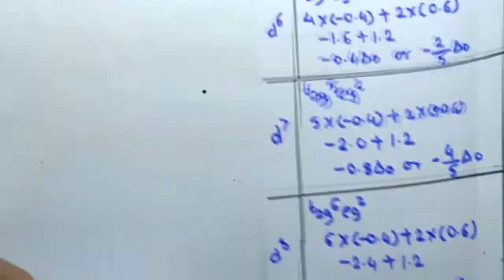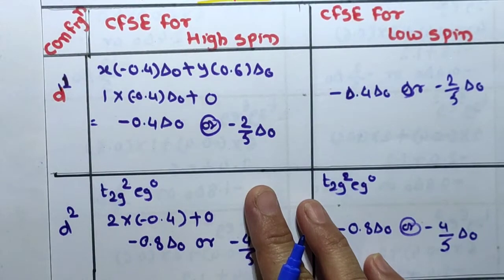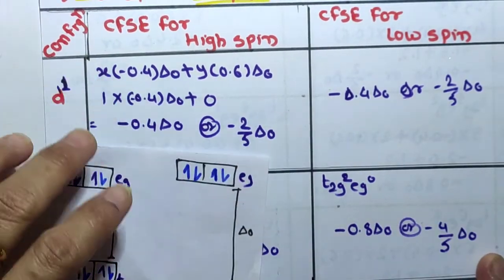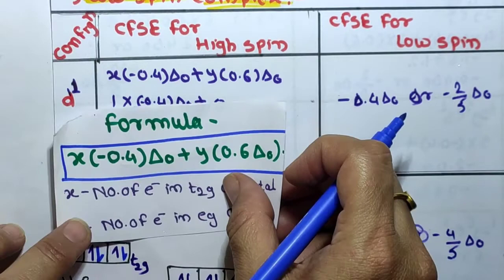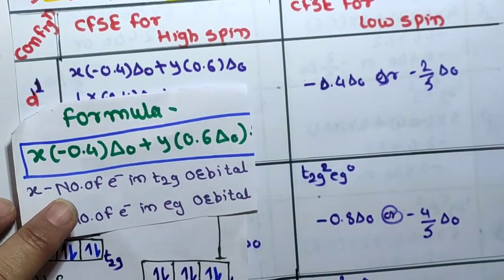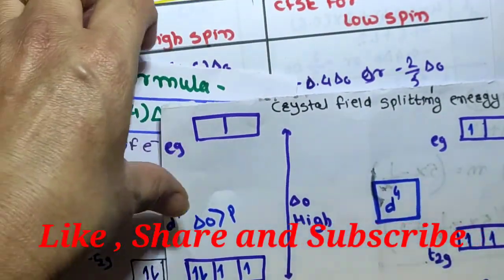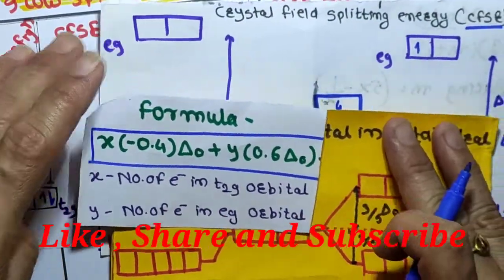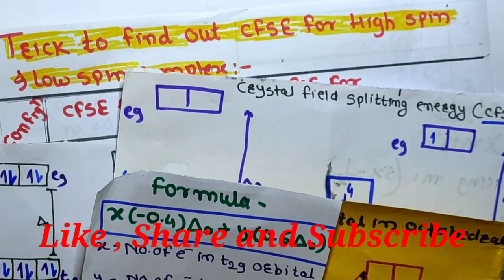In this way, we can calculate the CFSE value for d1 to d10 configurations using this simple formula. I hope you liked this video and understood crystal field stabilization energy. Please like, share, and subscribe to my YouTube channel. Thank you.